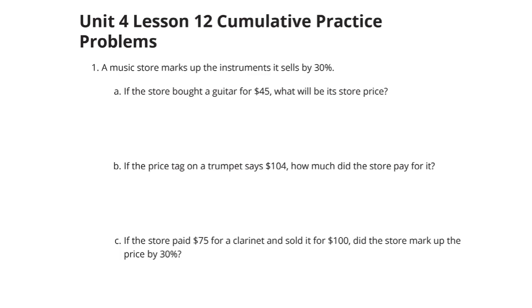In problem 1, a music store marks up the instruments it sells by 30%. If the store bought a guitar for $45, what will be its store price? If it marks it up by 30%, that means we need to find 30% of 45. 30% as a decimal is 0.30 or 30 hundredths. So if we take 45 and we multiply it by the 30 hundredths...